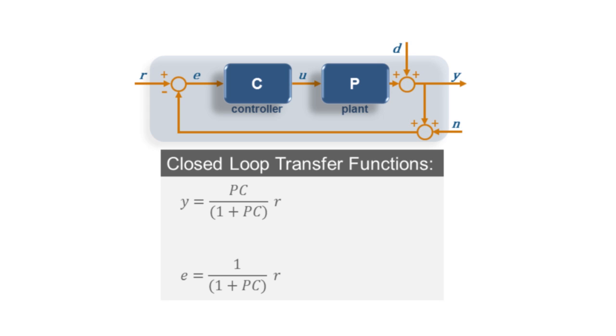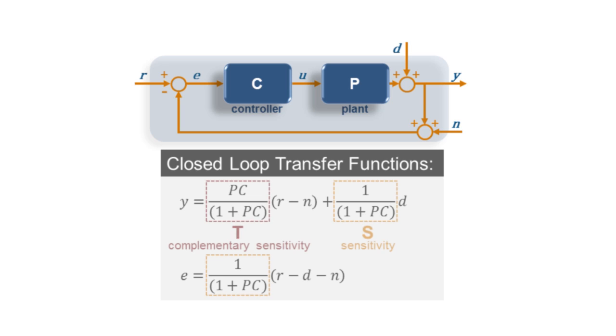Even if we add a disturbance to our plant model or some measurement noise to the system and redo the algebra, we will find that the input signals, in this case R, D, and N, end up propagating through the same two closed-loop transfer functions. PC over 1 plus PC is called the complementary sensitivity, or sometimes the transmissibility transfer function, hence the T.